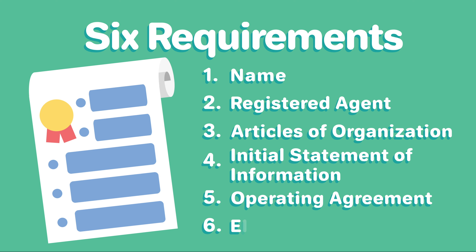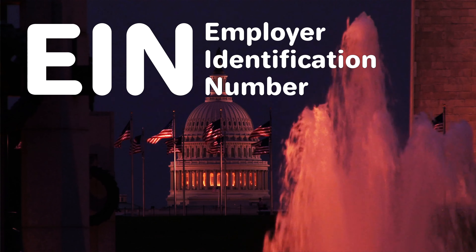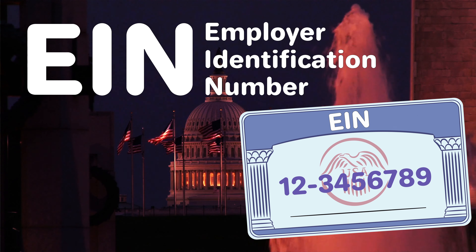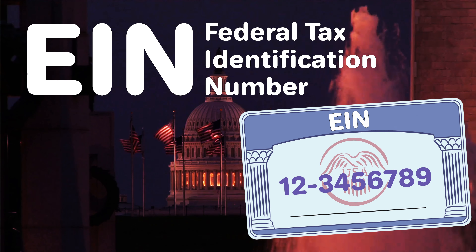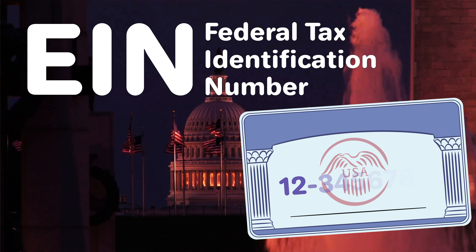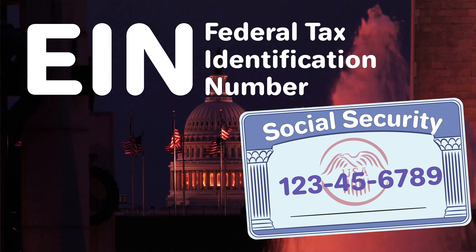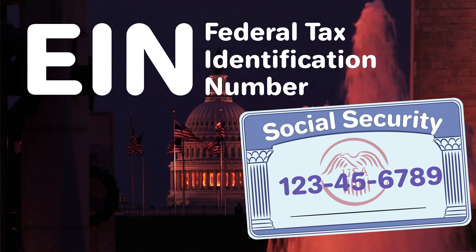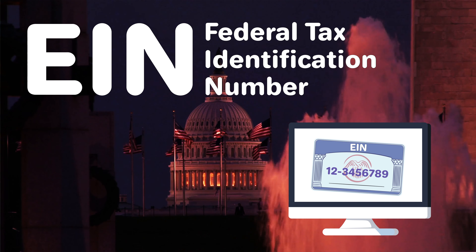Step six: Obtain an EIN. You'll need to get an employer identification number, or EIN, from the IRS. Also known as a federal tax identification number, your EIN is like a social security number for your LLC and is important for taxes and banking. EINs are free of charge and can be obtained from the IRS online or through the mail.